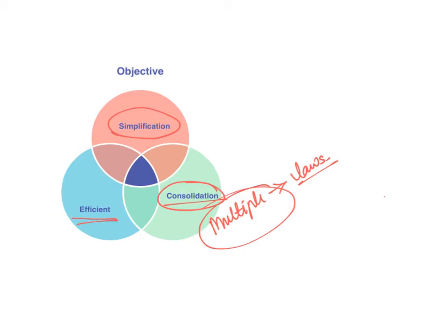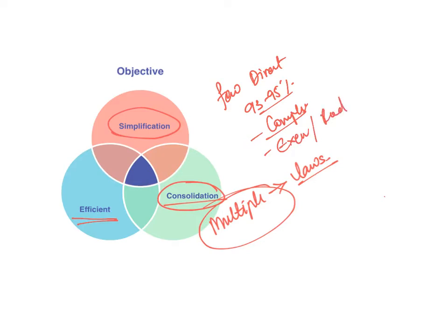As we discussed in previous videos, in India very few people pay direct taxes — almost 93% to 95% of Indians don't pay taxes because it is very complicated. There are a lot of exemptions and deductions because of which many people do not pay taxes. There is a lot of scope for tax evasion. Therefore, to make it more efficient and increase direct tax collection, since direct taxes are better compared to indirect taxes, the government wants to introduce DTC — Direct Tax Code.